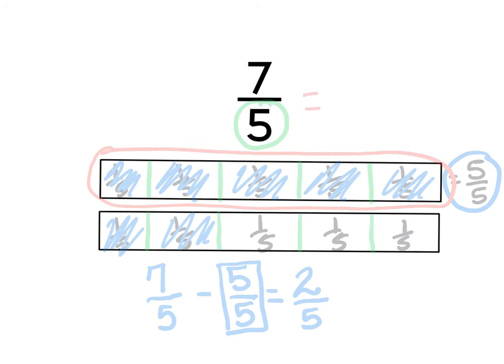So I'm going to put my equal sign because it's equivalent. We're renaming it. So I have one whole, and a mixed number is a whole number and a fraction, and I have 2 fifths that are left over.